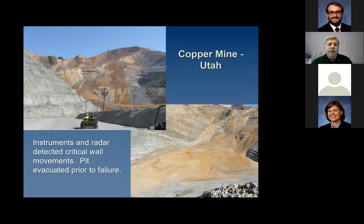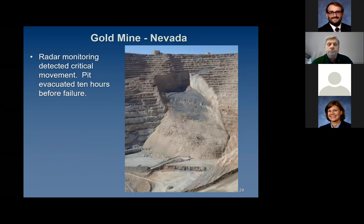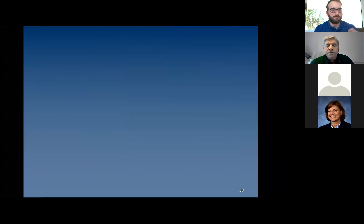Another example: a copper mine in Utah was monitored and they were able to withdraw personnel and equipment before the failure occurred — a fairly massive failure, right down onto the active workbench. A final example is a gold mine in Nevada where the pit was evacuated 10 hours before failure. A little closer than we might like, but still a success story. We've covered slope stability monitoring methods in the mining industry and we've come a long way since the early days of mining.